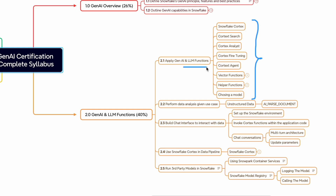I strongly recommend practicing the complete function including structured output with different parameter options, and intentionally testing a few wrong values to understand the error message pattern. Practice all the purpose-built SQL functions like Classify Text, Extract Answer, Summarize, Translate, Embed Text, and Parse Document along with other helper functions. Note that Snowflake is renaming those functions to AI Summarize or AI Translate to support multi-modality. Don't skip the vector functions, especially cosine similarity, inner product, and L1 or L2 distance, as these concepts may appear in multi-step questions.